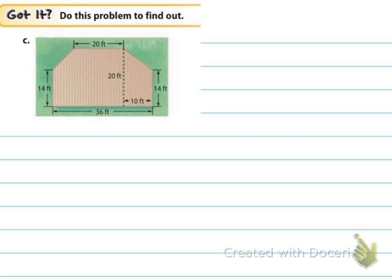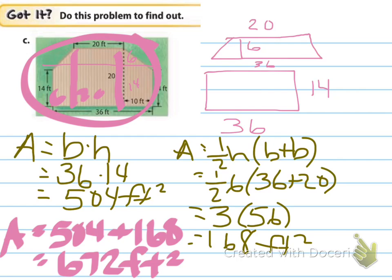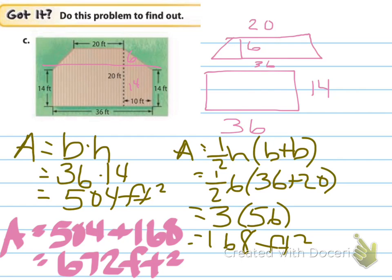Now do C — find the area, then we'll come back. Pause video. For C, I chose to separate it into a rectangle and a trapezoid going that direction, which seemed easier. If you separated it differently with three shapes, you'd realize that one section is 20, another is 10, and another is 6, requiring three different area formulas — completely fine as long as the math is correct. No matter which way you did it, the final answer should be 672 feet squared.